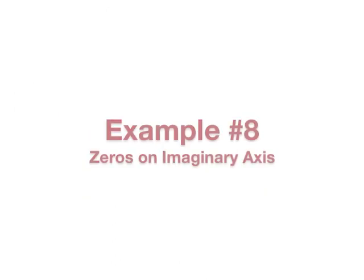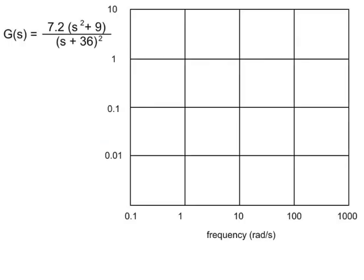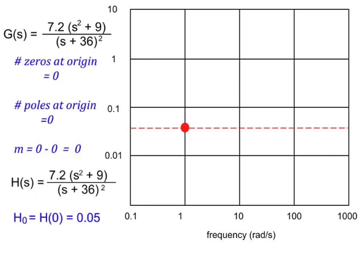Now let's look at our last example, and this one has zeros on the imaginary axis. The transfer function of interest is G of s equals 7.2 times (s squared plus 9) over (s plus 36) squared. This transfer function has neither zeros nor poles at the origin, so m is equal to zero. H of s is therefore the same as G of s. We can find H sub zero — it's 0.05. We'll plot a point at 1 radian per second at 0.05, and then we'll draw the low-frequency asymptote through this point. This line has slope zero.